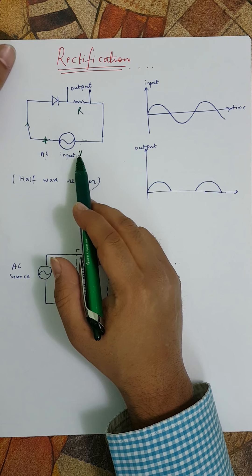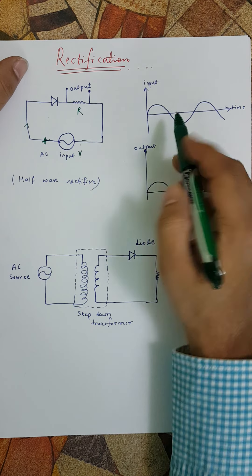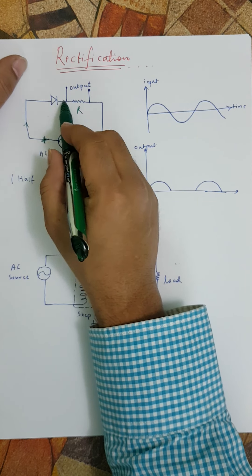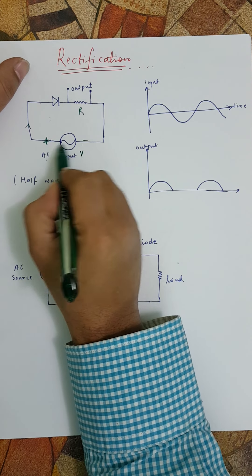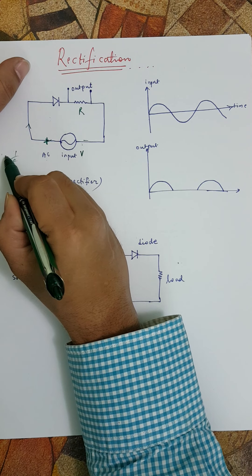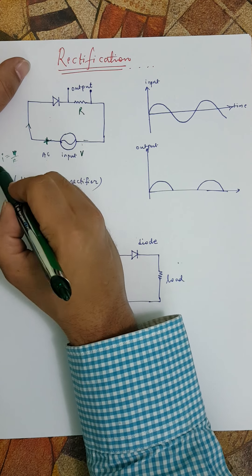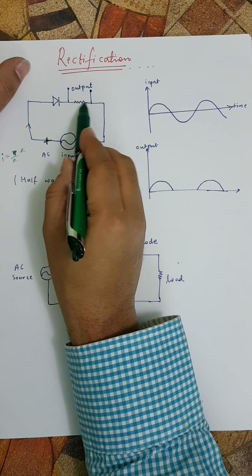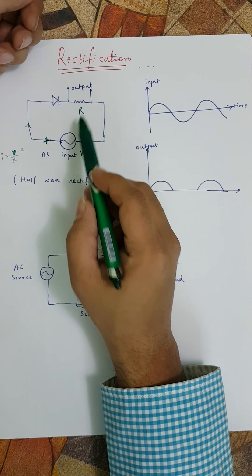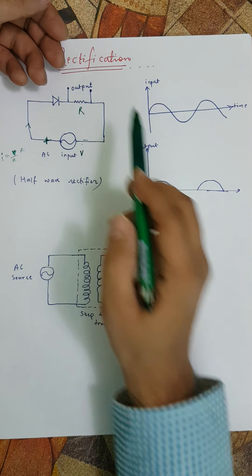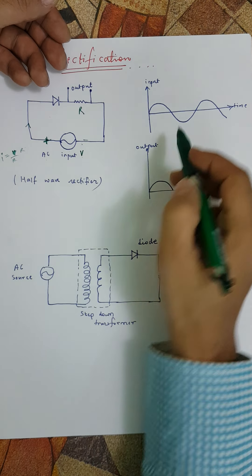Coming back to this: this is the input side, so this is the input voltage. When this is forward, this diode allows the current to flow. The current is V divided by R, and this current into the resistance R will be the potential difference across it. Whatever potential difference is applied across this, the same is reflected across this resistance.